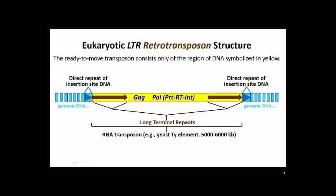The yeast Ty element is shown here as it would exist integrated into cellular genomic DNA. Like other transposons, active eukaryotic retrotransposons leave direct repeats of genomic DNA flanking the element after transposition.